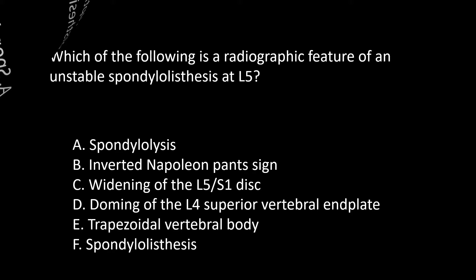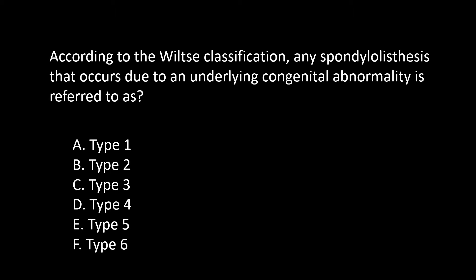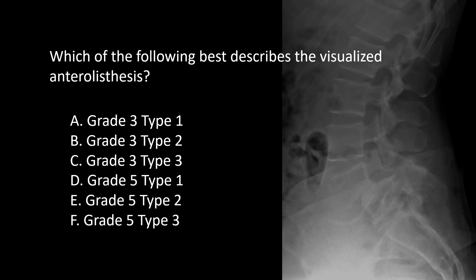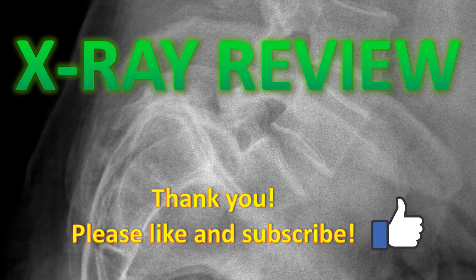Which of the following is a radiographic feature of an unstable spondylolisthesis at L5? The correct answer is a trapezoidal vertebral body shape. According to the Wiltse classification, any spondylolisthesis due to an underlying congenital abnormality is referred to as a type 1. Which of the following best describes the visualized anterolisthesis at L4? This is at least a grade 3 and looks like a type 2, so this would be grade 3 type 2 spondylolisthesis. Thanks for watching — please like and subscribe.